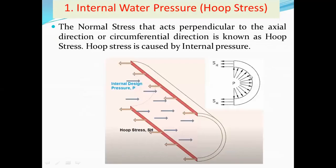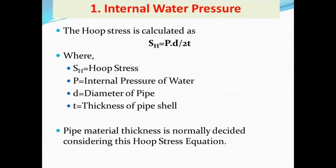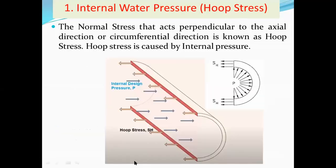The first stress is internal water pressure, also called hoop stress. The stresses induced inside the pipe because of internal water pressure are called hoop stresses. It is the normal stress that acts perpendicular to the axial direction. The axial direction is the direction of flow — if liquid flows along the pipe axis, all directions perpendicular to that axis are the circumferential directions, and the stress acting in those directions is the hoop stress.